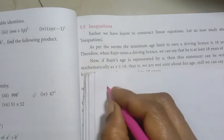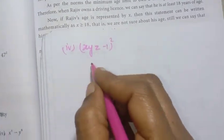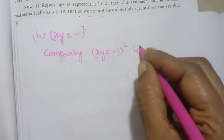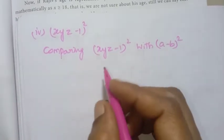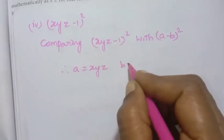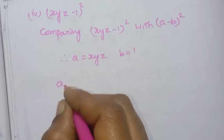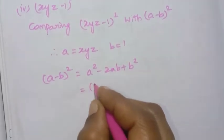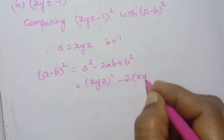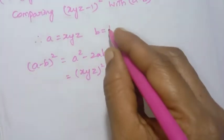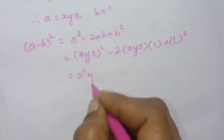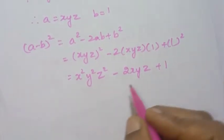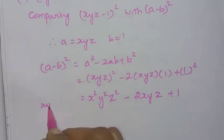Fourth sum: xyz minus 1, the whole square. Compare with a minus b, the whole square. So a equals xyz, b equals 1. Formula: (a − b)² = a² − 2ab + b². Substituting: xyz squared minus 2 times xyz times 1 plus 1 squared equals x²y²z² − 2xyz + 1.